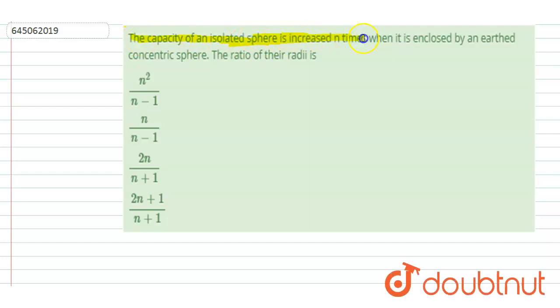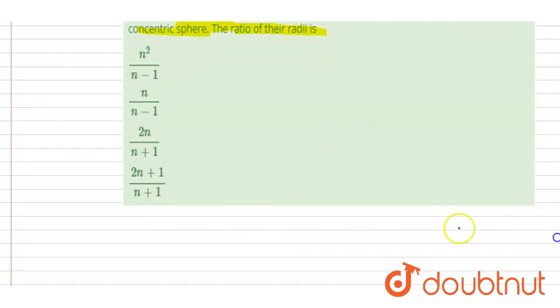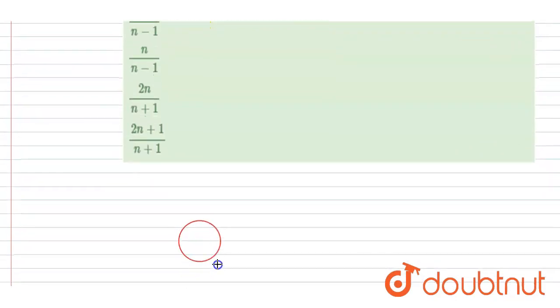...is increased n times when it is enclosed by an earthed concentric sphere. The ratio of their radii is... So if you see here, if I talk about the spheres, spherical capacitor, if I take a sphere...